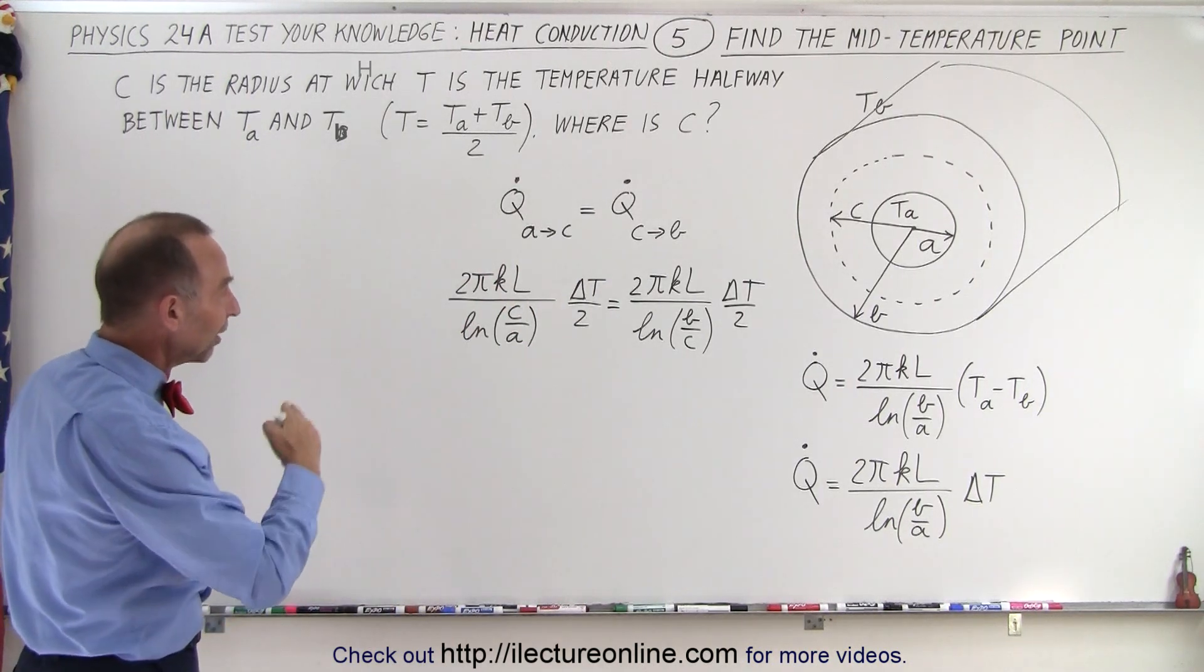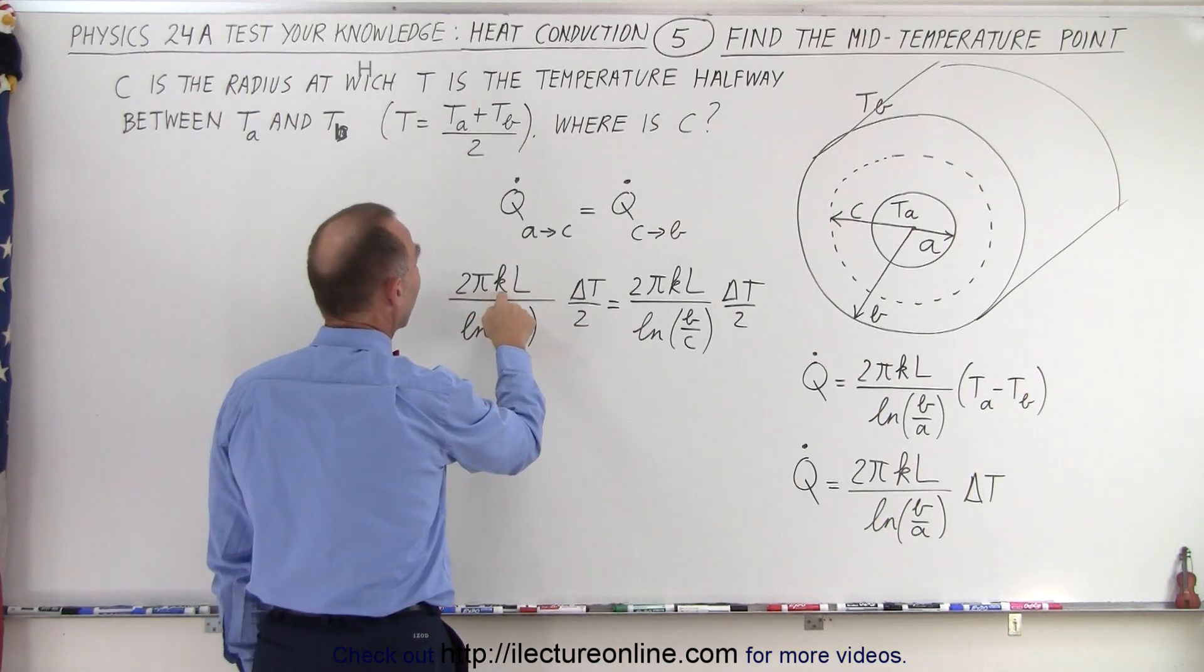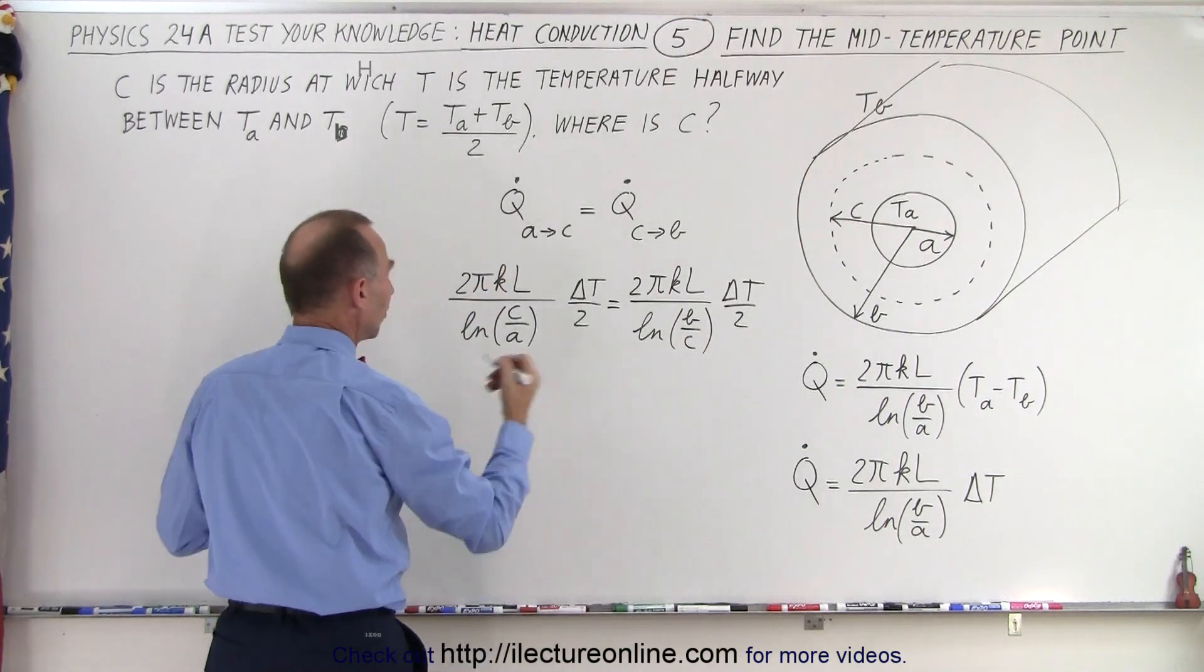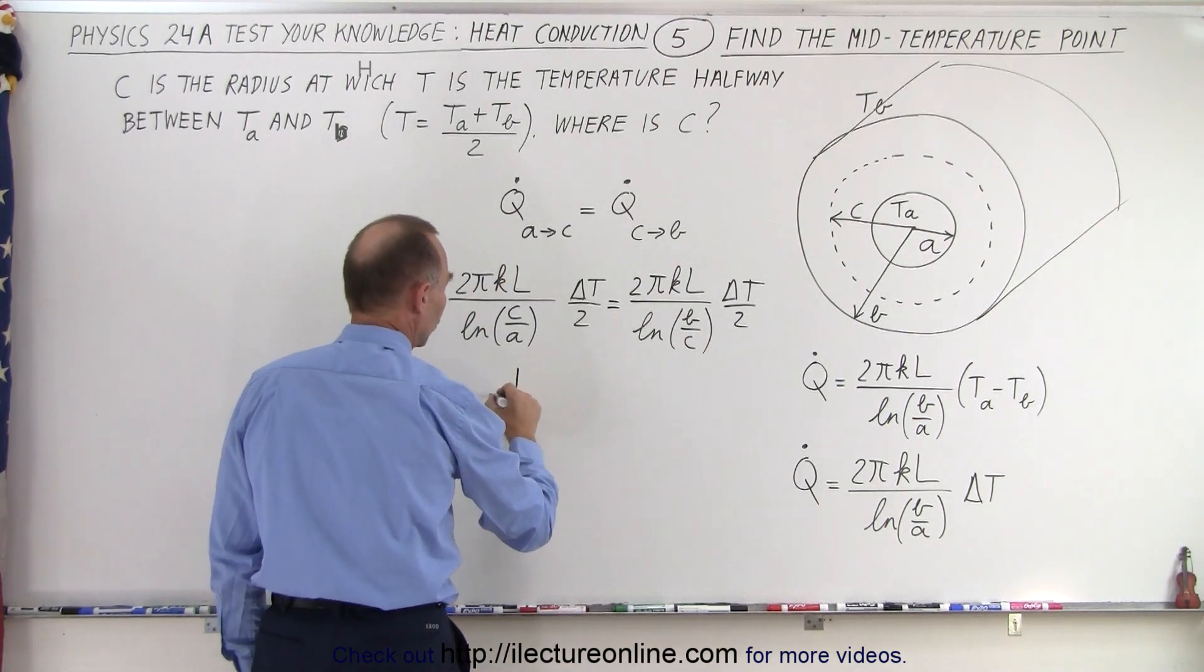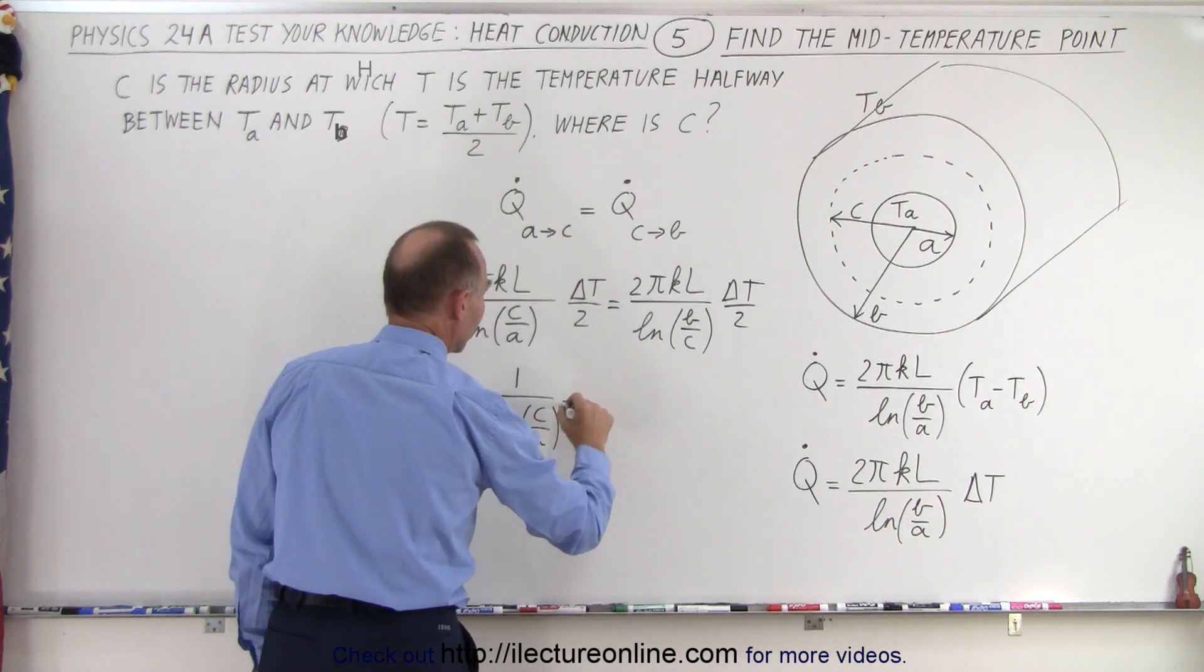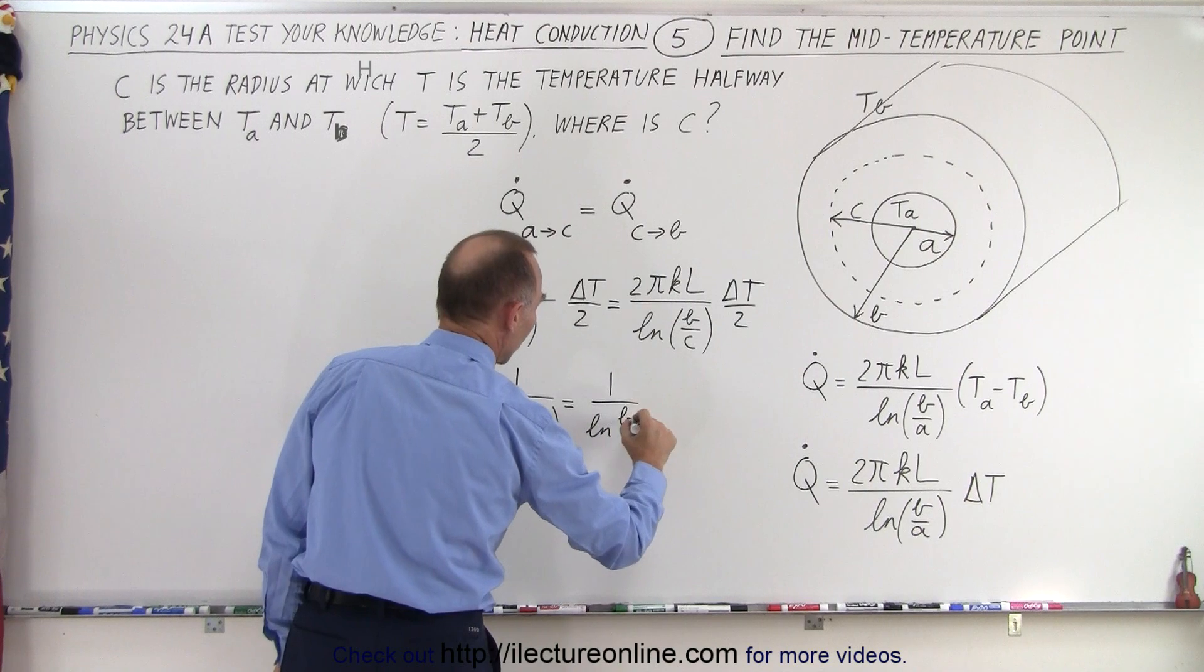Now when we look at both sides of that equation we see a lot of similarities. We see that 2πKL is the same as 2πKL, delta T over 2 is the same as delta T over 2. So essentially this equation reduces to 1 over the natural log of C over A is equal to 1 over the natural log of B over C.